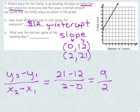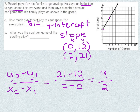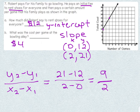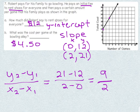Now, if you just got this graph and they asked what is the slope, 9 over 2 would be an acceptable answer. But the question is: what was the cost per game at the bowling alley? So based on our slope, what would the cost per game be? When we divide 9 by 2, we get a cost of $4.50. So Robert started out with $12 for renting the shoes, and then any game they play after that is going to cost $4.50.